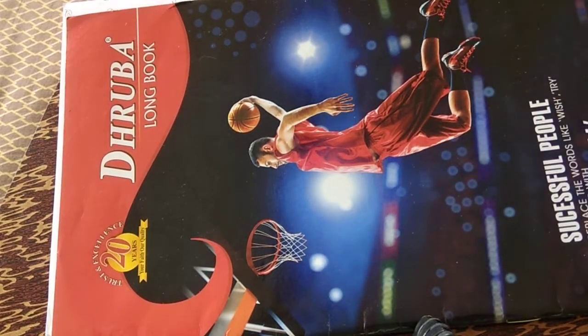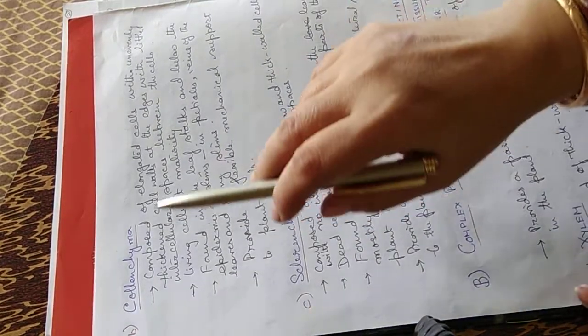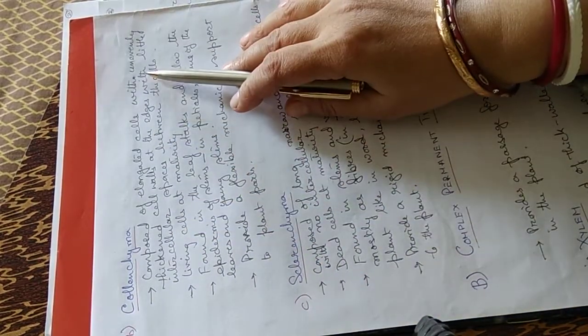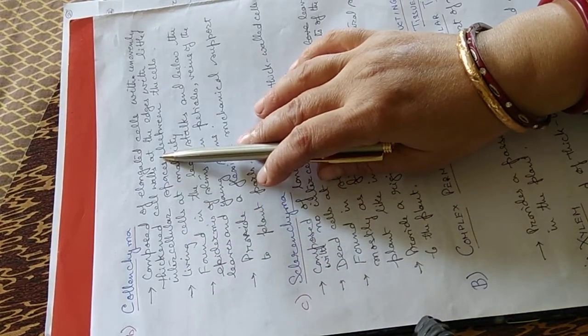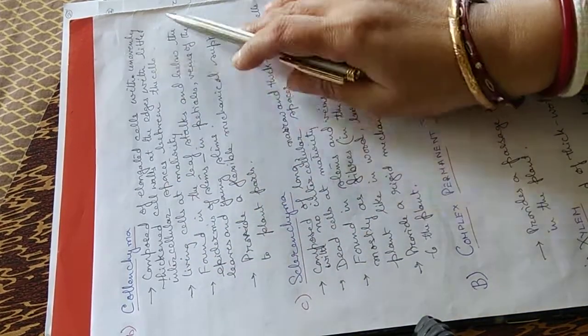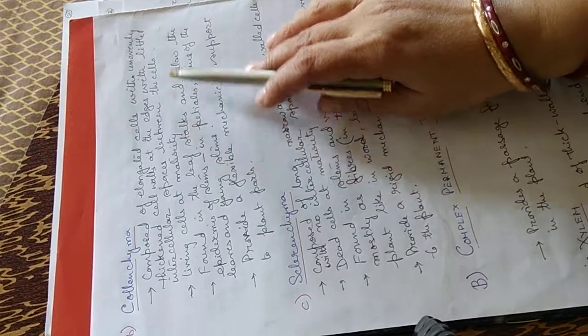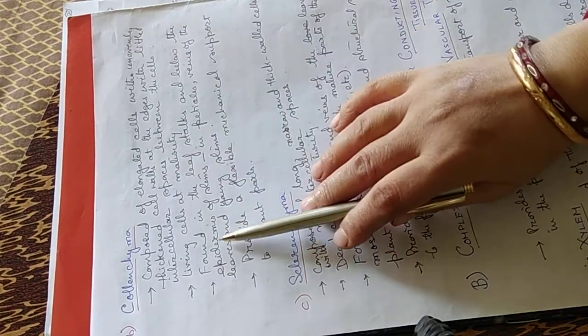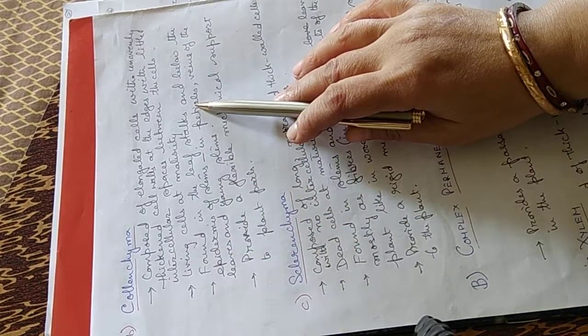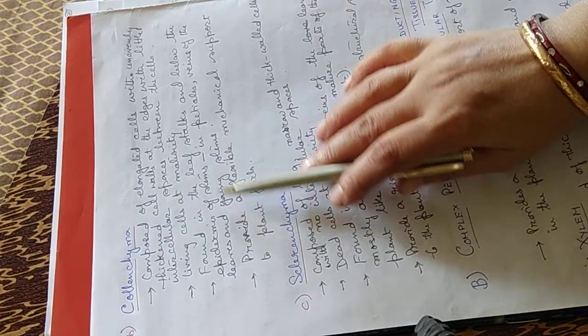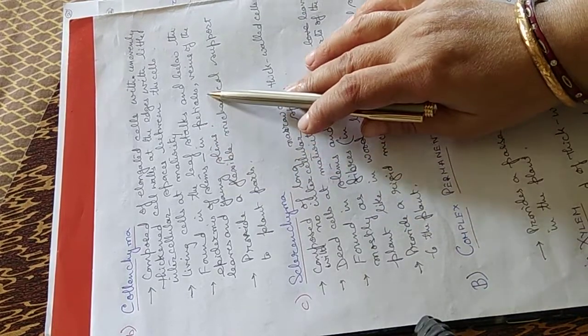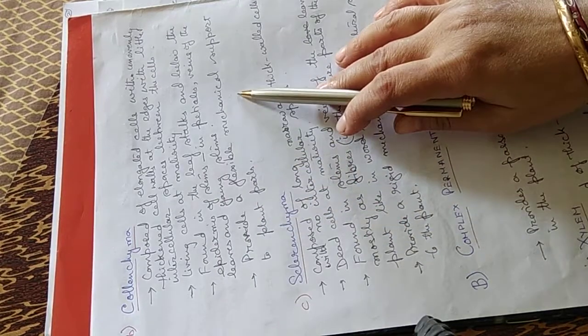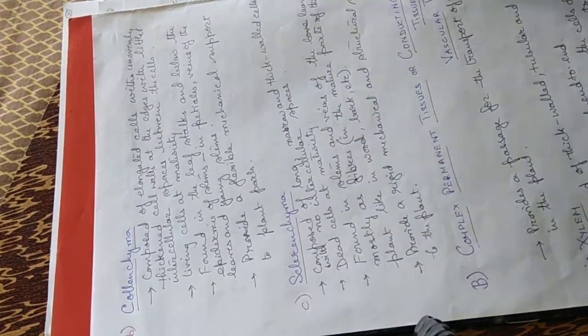Now, collenchyma. Collenchyma is composed of elongated cells with unevenly thickened cell walls at the edges with little intercellular spaces between the cells. They are living cells at maturity. They are found in the leaf stalks and below the epidermis of the stem. They are in the petioles, veins of the leaves, and young stems. They provide a flexible, mechanical support to the plant parts.